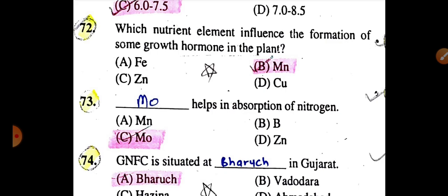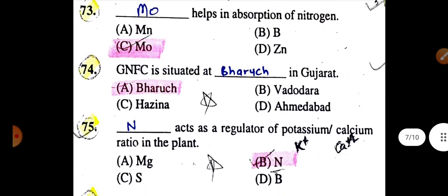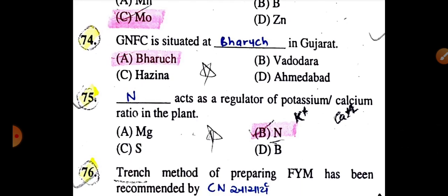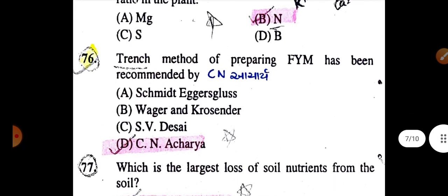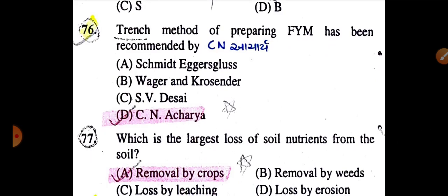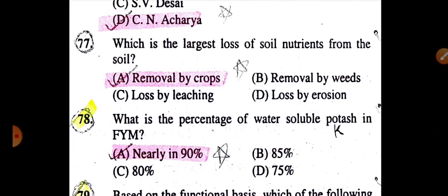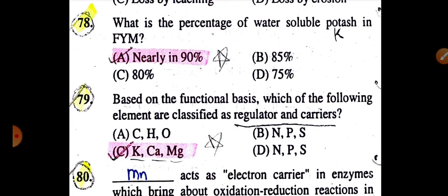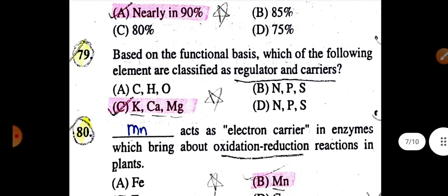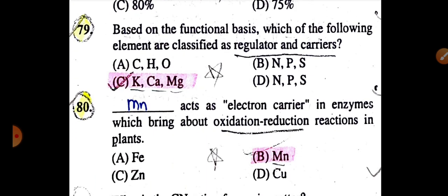Which nutrient element influences the formation of some growth hormones in plants is MN. Molybdenum helps in absorption of nitrogen. GNFC is situated at Bharuch in Gujarat. Nitrogen acts as regulation of potassium-calcium ratio in plant. Trench method of preparing FYM has been recommended by CN Acharya. Which is the largest loss of soil nutrient from the soil is removal by crop.